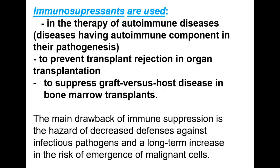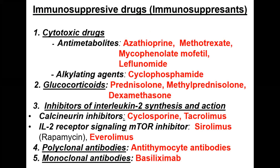Immunosuppressants are used to treat autoimmune disorders, to prevent transplant rejection in organ transplantation, and to suppress graft-versus-host disease in bone marrow transplants. The main drawback of immunosuppressants is decreased defense against infectious pathogens, leading to increased susceptibility to infections. A second disadvantage is the risk of emergence of malignant cells.